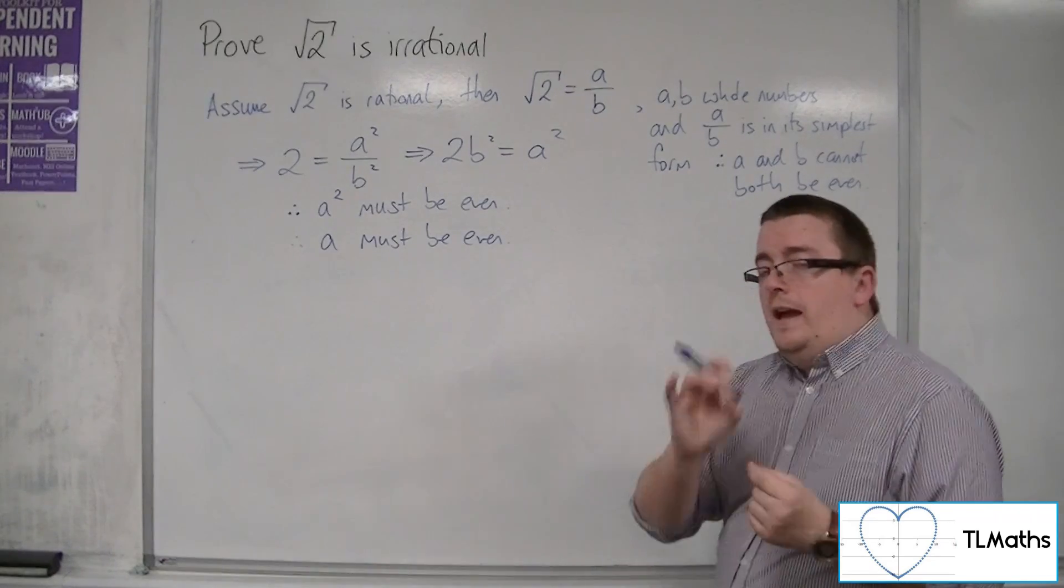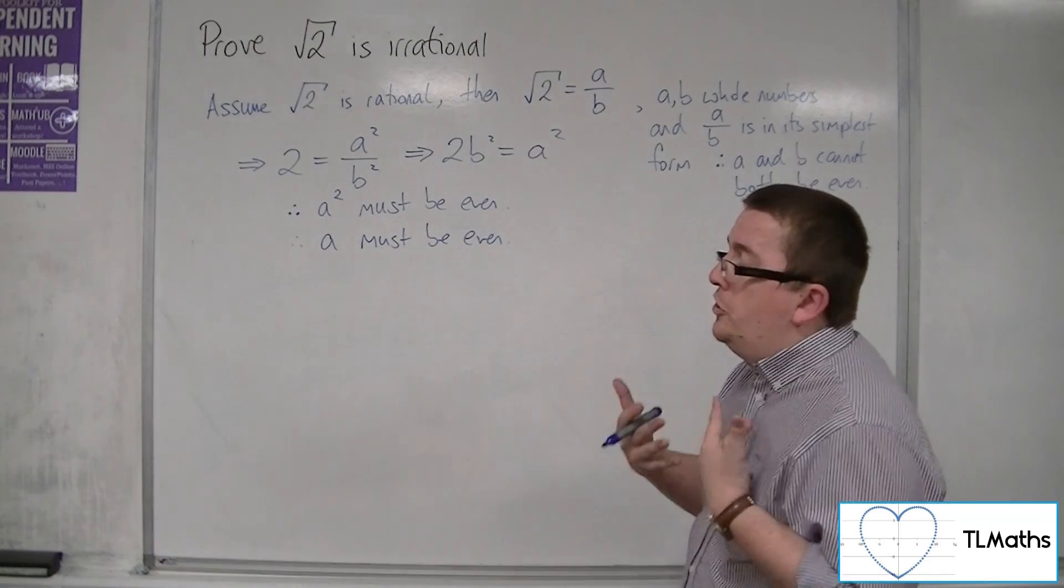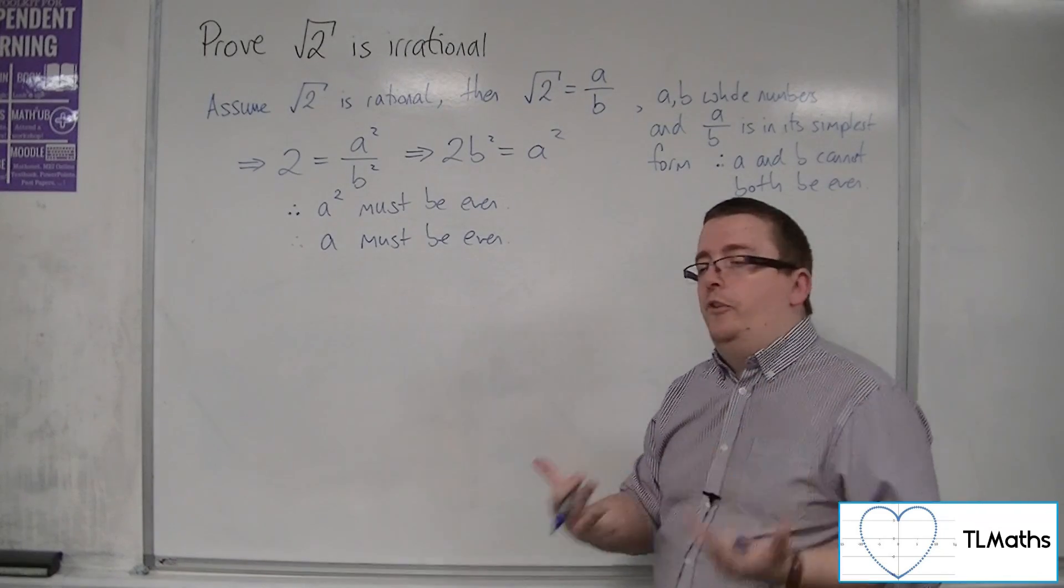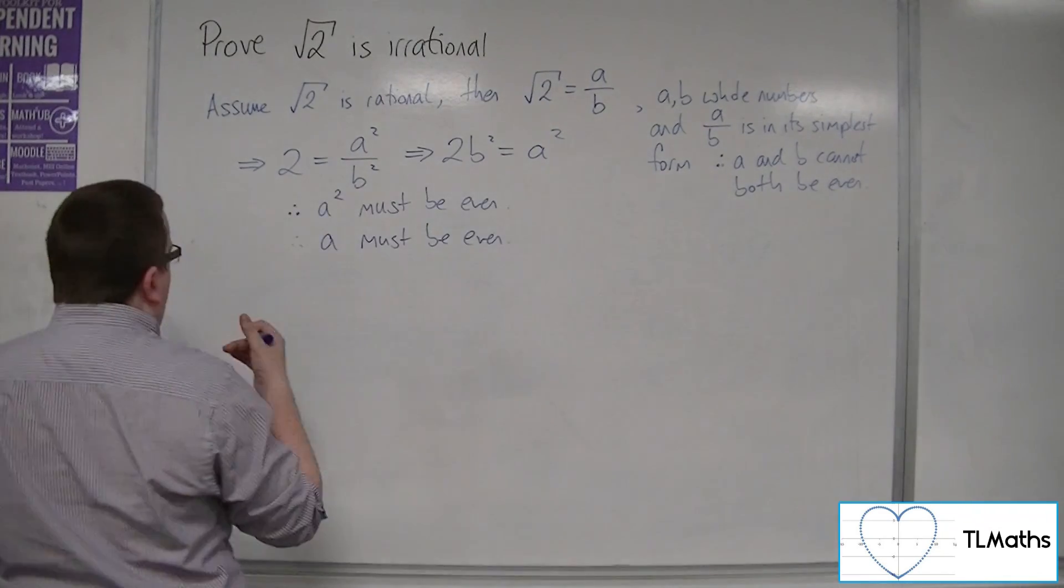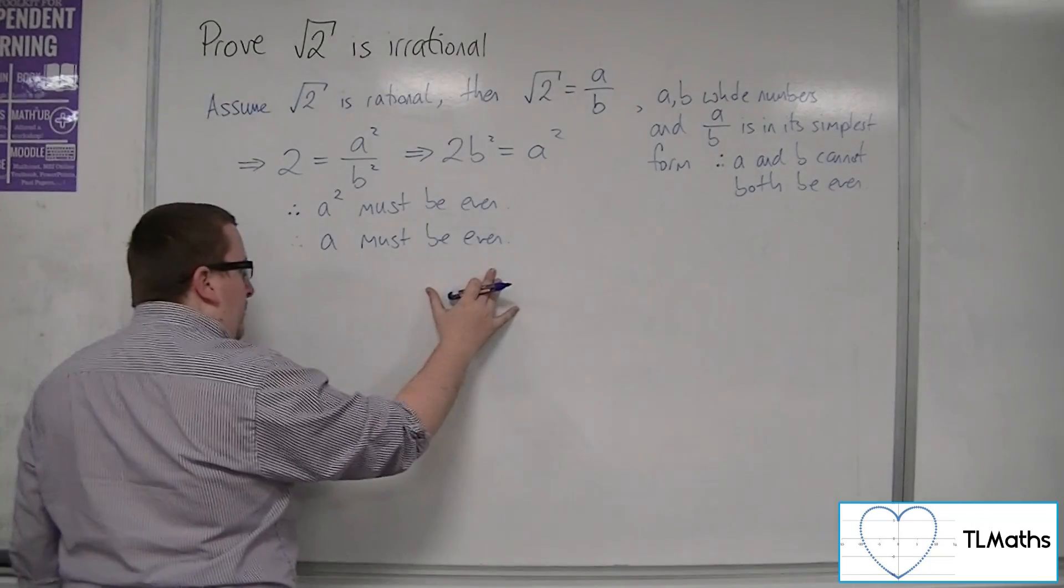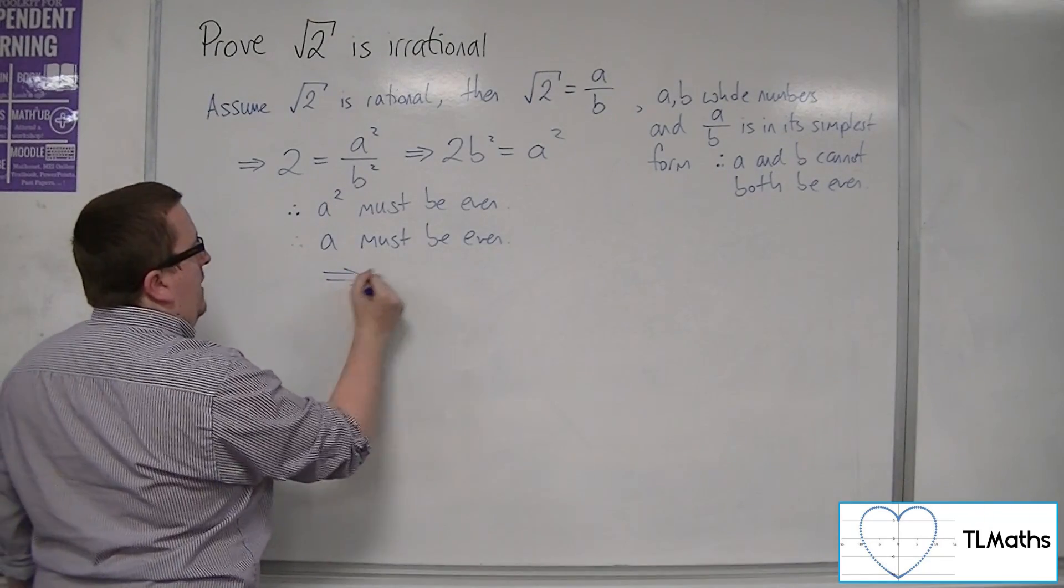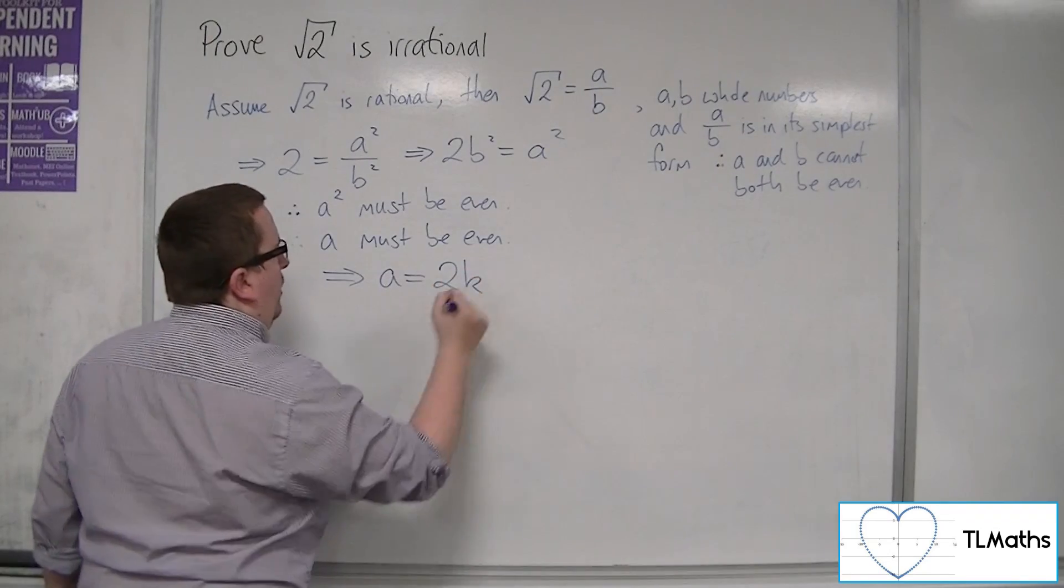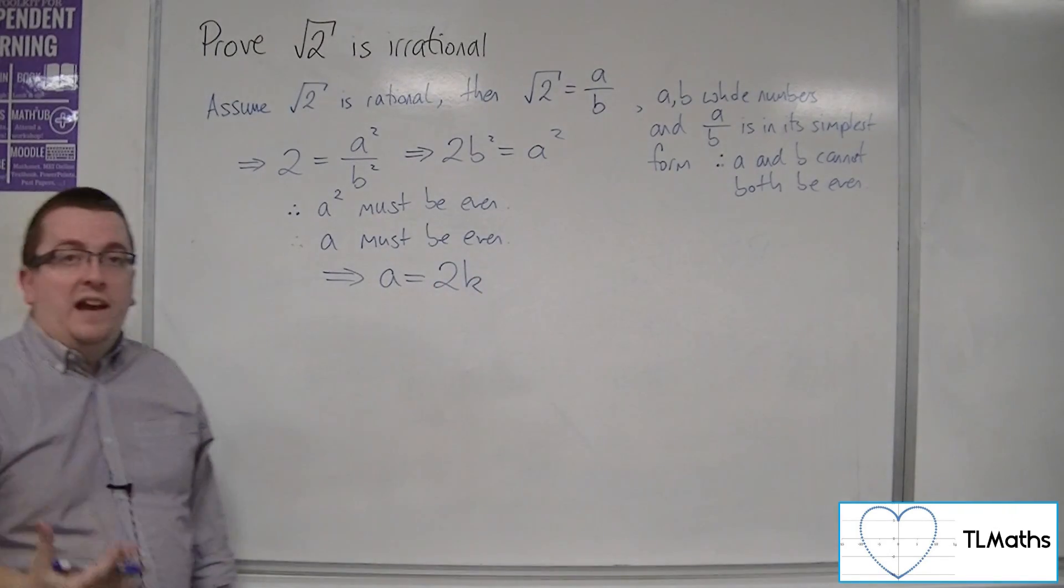Now, if a is even, that means I can write it as a multiple of 2. So if I say a must be even, then a is some multiple of 2, let's say 2k.